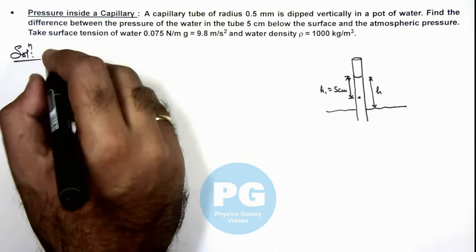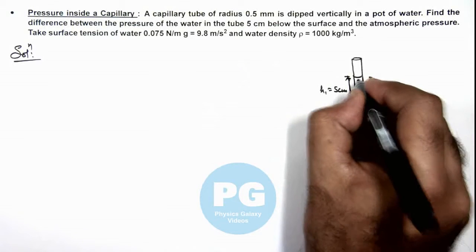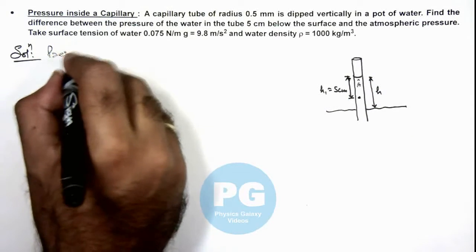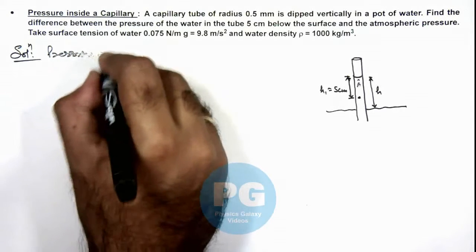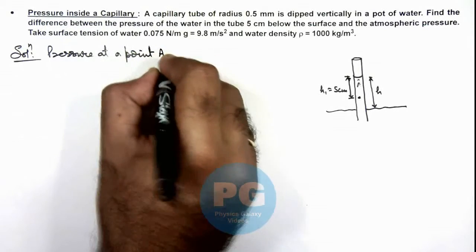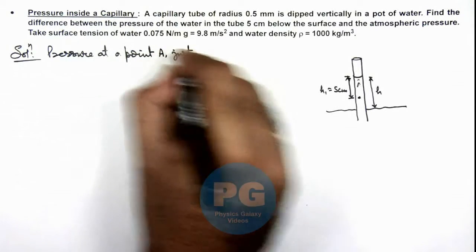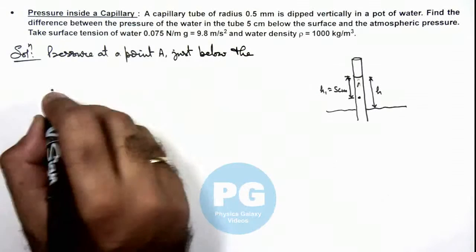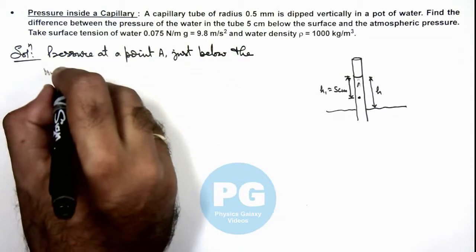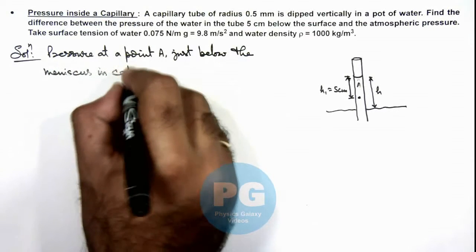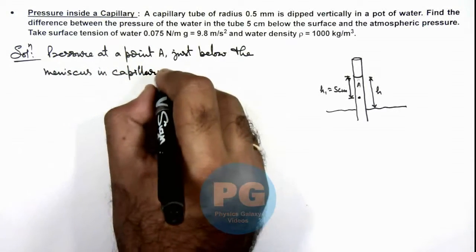So if we calculate the pressure first at this point A, then we can say pressure at point A just below the meniscus in capillary is...